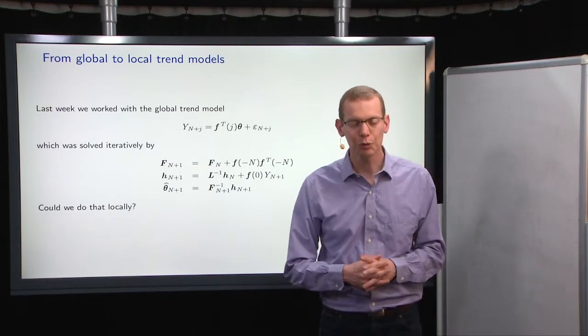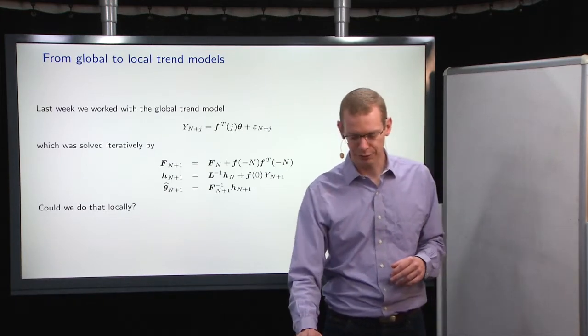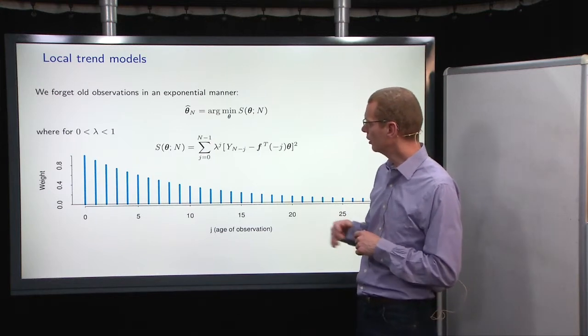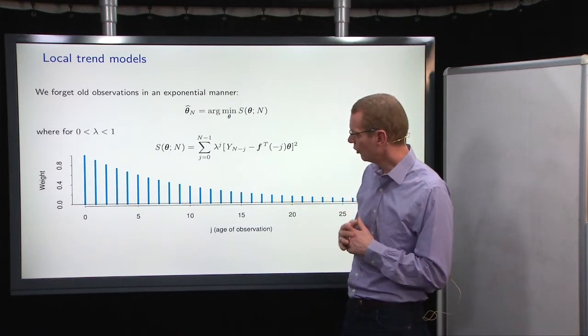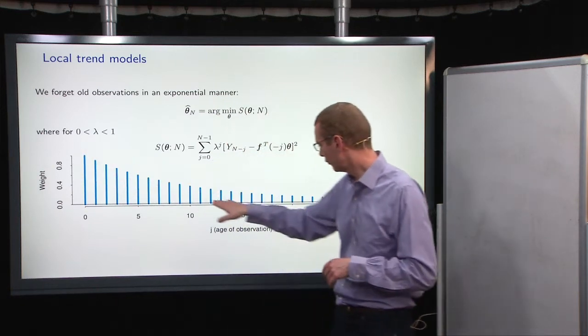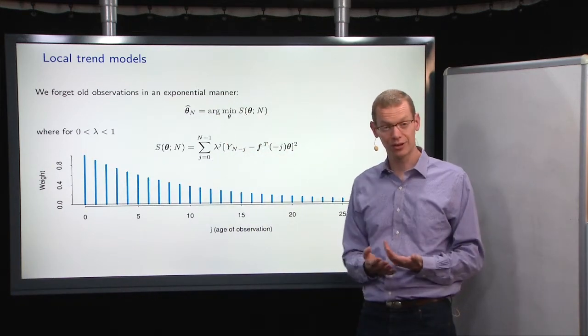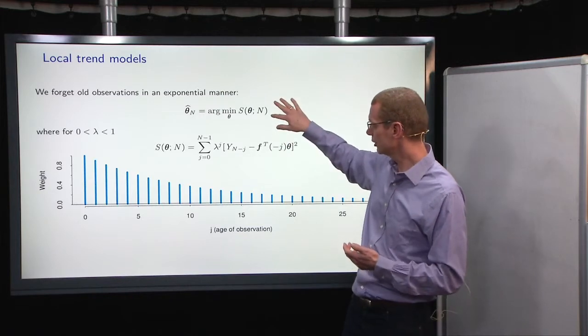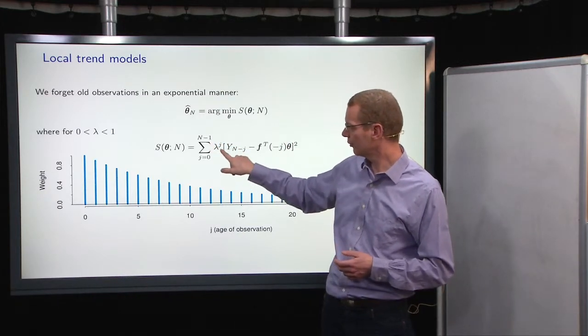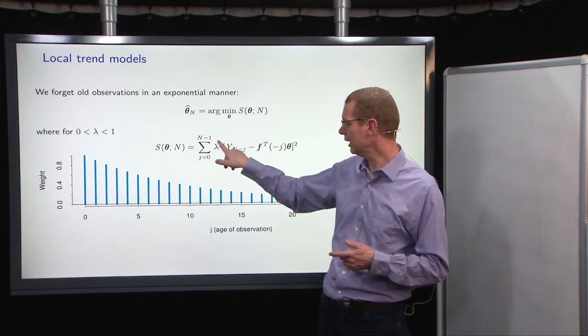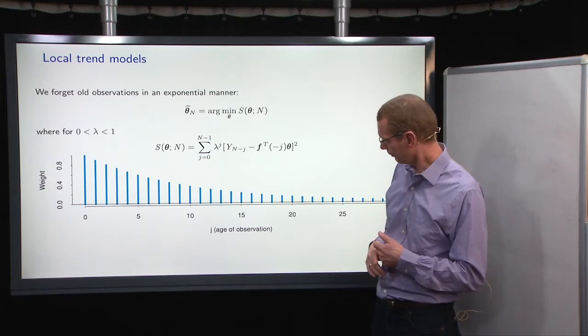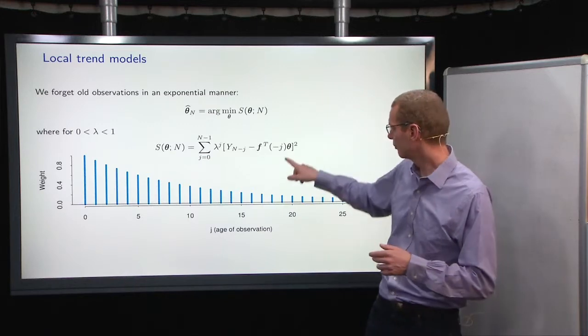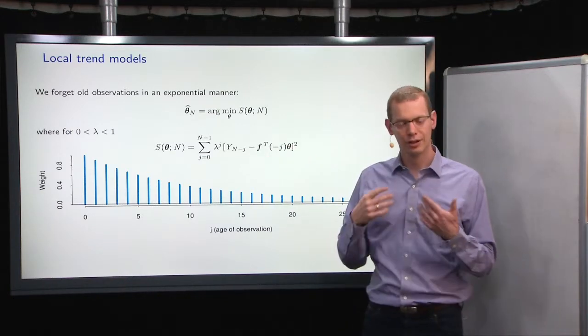Now, could we do this locally as well? That's the question. And of course, the answer is yes, otherwise I would not present it. But what we did in the local trend model, also in the exponential smoothing, was to have a set of weights. When you get further back in time, they get smaller and smaller. That's the same thing we want to do. We still want to have a quadratic objective function, and we just want to use lambda to some power as weight, and then we want to minimize the sum of square prediction errors.